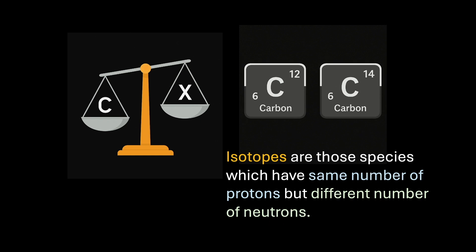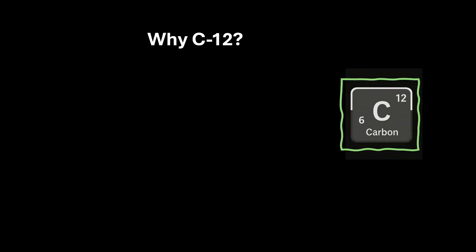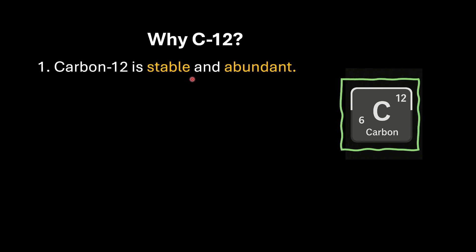As we can clearly see, carbon has atomic number Z = 6. We represent mass number with A, so the mass number of carbon-12 is 12 — that is our standard, not carbon-14. You might ask: why carbon-12 specifically? Reason number one is that the carbon-12 isotope is stable and abundant — it is a non-radioactive isotope found in high natural abundance.